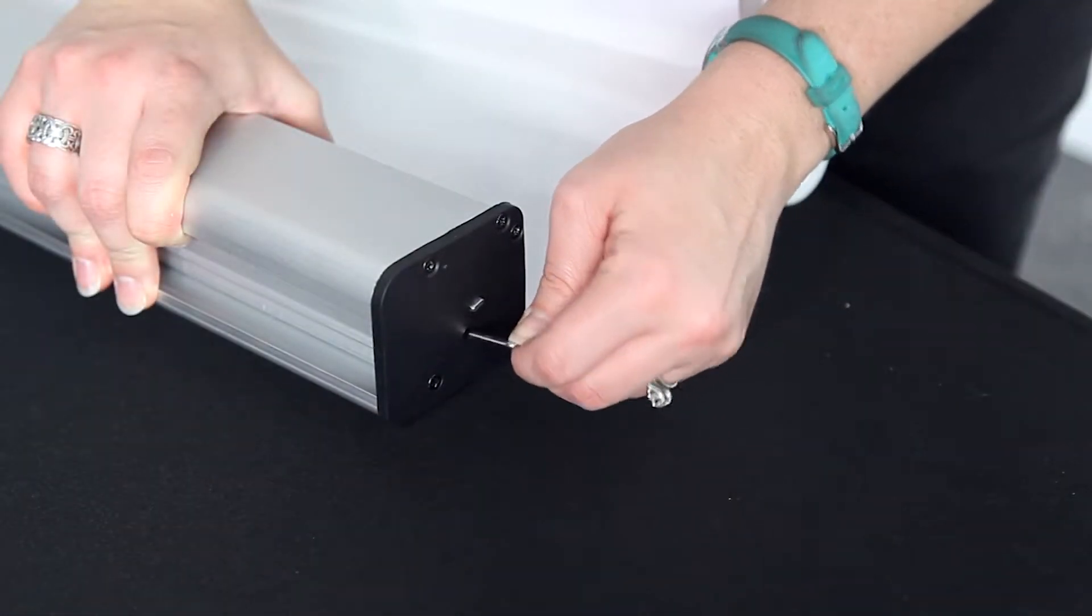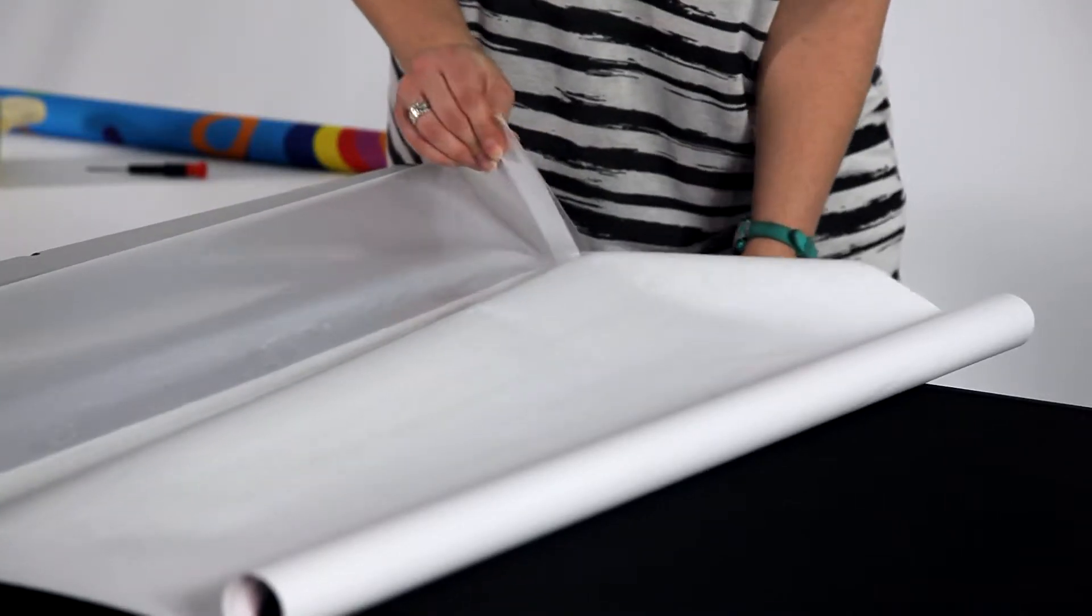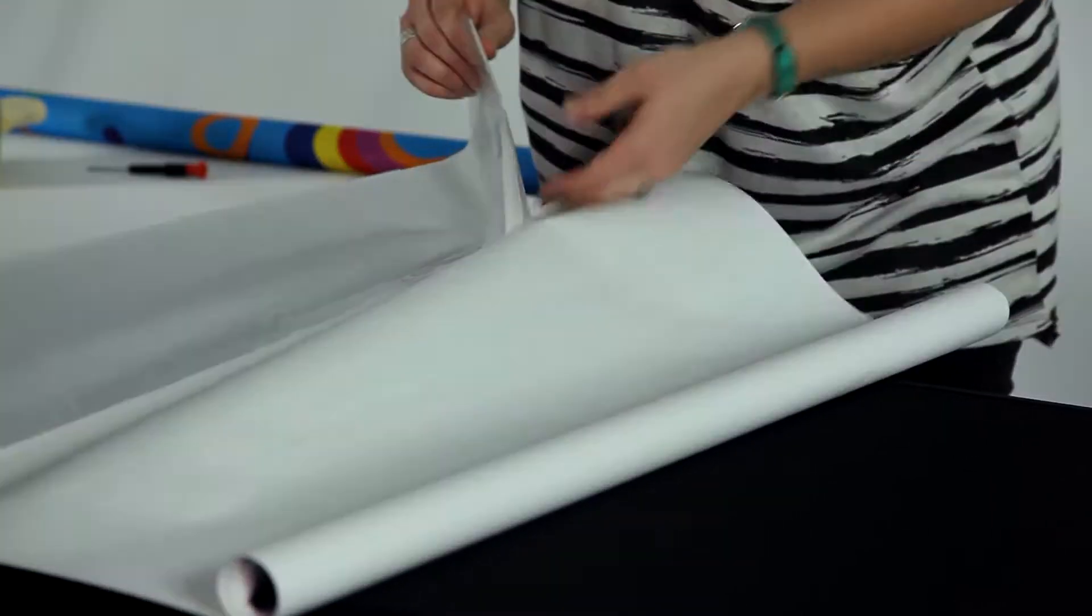Locate the side where the outside hole aligns with the inner hole and insert the locking pin. Now, slowly peel the plastic adhesive away from the bottom of the banner.